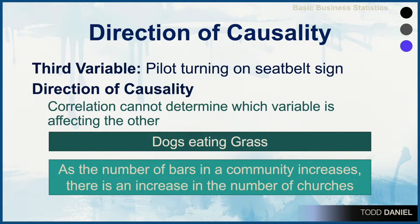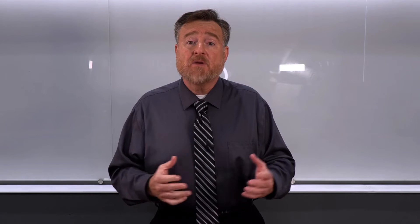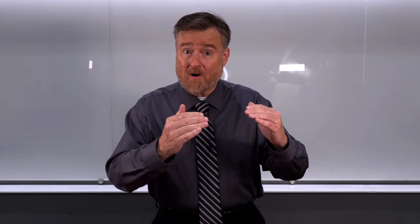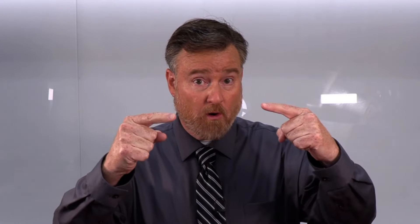Another example: as the number of bars in a community increases, there is an increase in the number of churches. What explains that relationship? Is it that in a community with all those sinners, we need more churches? Another plausible explanation could be that all those religious people could drive you to drink. The fact is that both of these observations are driven by a third variable. In a community with more churches or more bars, you have more people. Population explains why you have more or fewer of each.